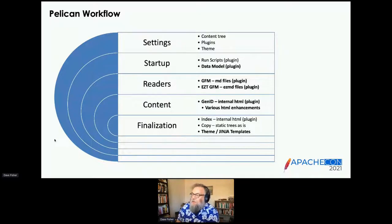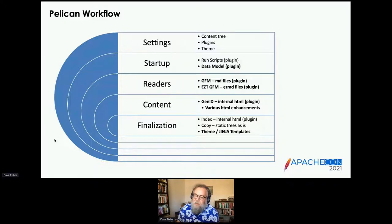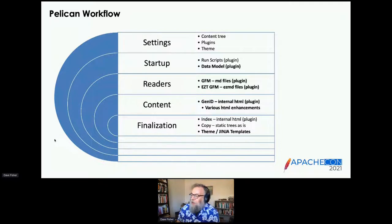You have your settings file, which basically specifies your content tree — what you're including, what you're excluding, what's static. You're going to specify what plugins you're going to use, and you're going to specify the theme and where the theme is in your tree. Then once the settings are going, it starts up. At startup, we have a couple of plugins — one is to run scripts, and the important one is the data model.